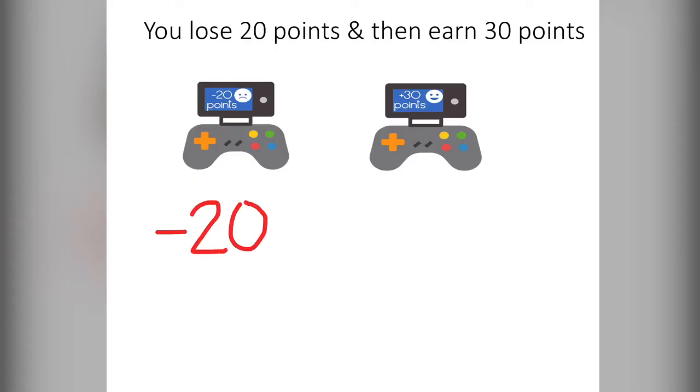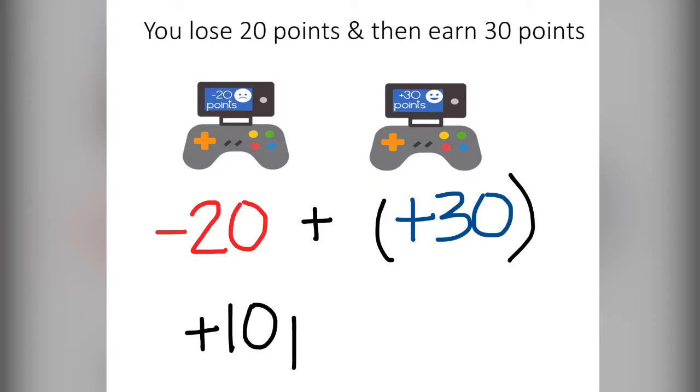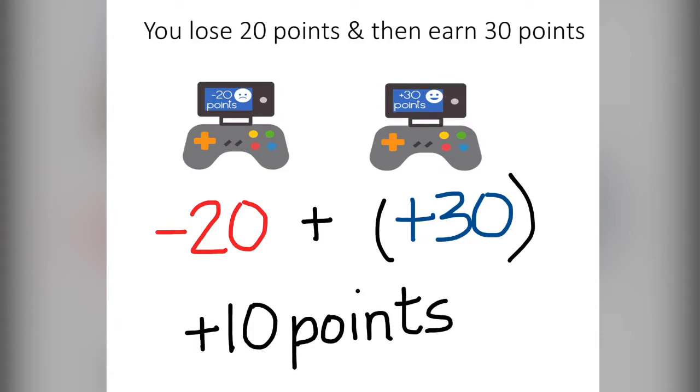Our first example talks about a video game where you lose 20 points and then you earn 30 points. The first thing we want to think about is we have to recover from that negative 20. So we have to make up for the 20 that we lost and then look at the difference. We have 30 points so therefore we are up 10 points. When our signs are different we subtract the numbers and go with the larger sign.